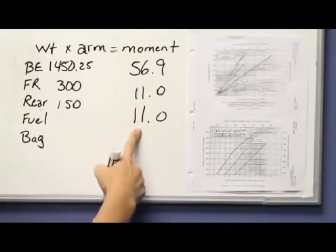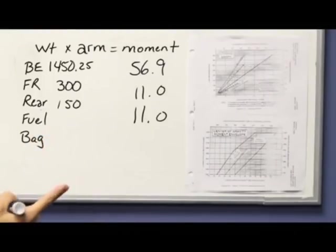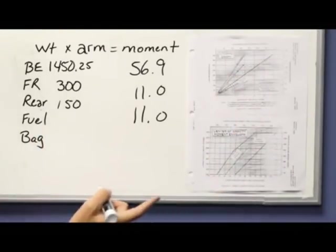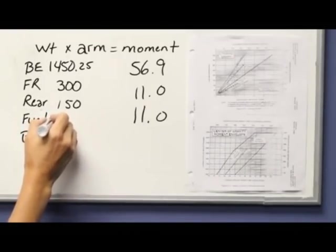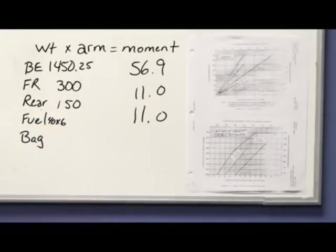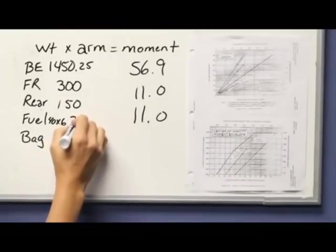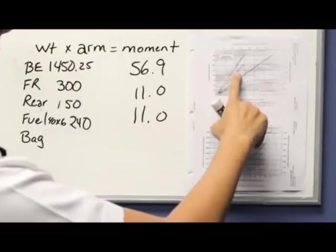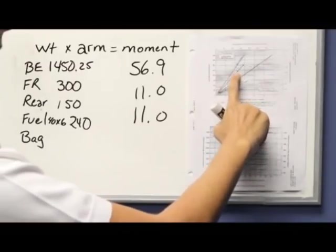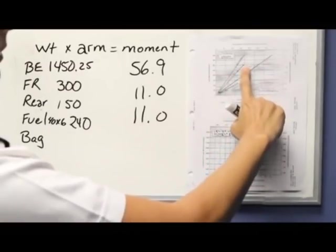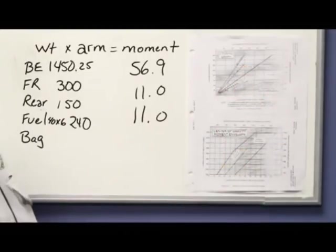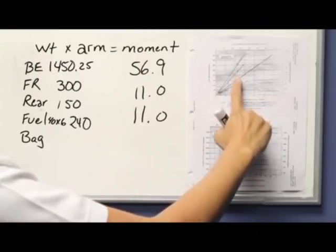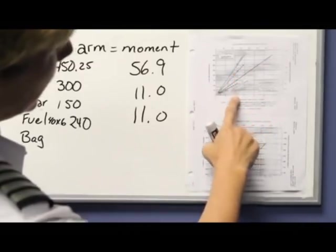The fuel, remember, is in gallons. This airplane holds 40 usable gallons, so I need to put 40 times 6 is 240 pounds. Then I see where the fuel is 240 pounds. They've marked it on the chart for me here. This gallons line here is if the airplane has extended range tanks, which ours does not, so we would use this line and come straight down. It looks like it is just one box over, so I would call it 10.5.